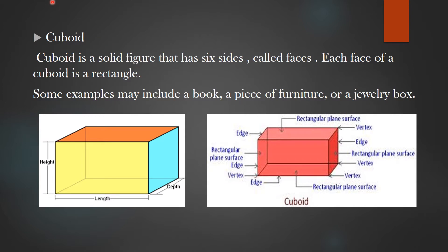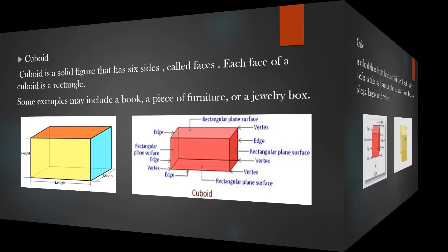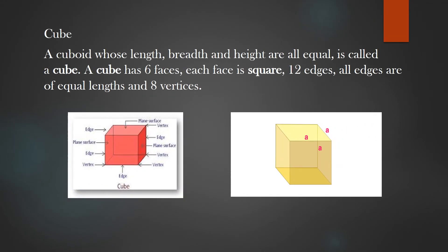A cuboid whose length, breadth and height are all equal is called a cube. A cube has six faces and each face is a square. It has 12 edges and all edges are of equal length, and it has eight vertices. From the figure we can also see the edges, vertices, and faces of a cube.